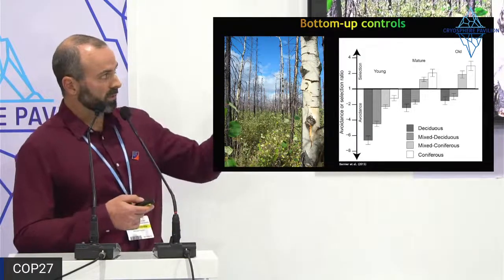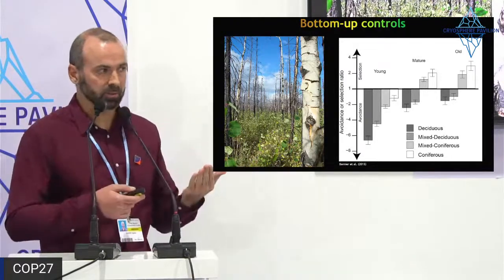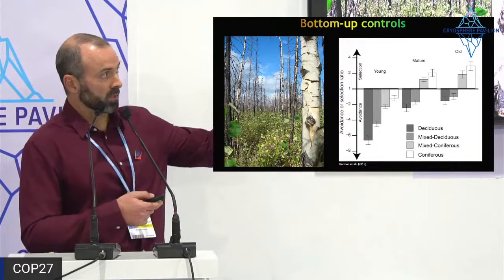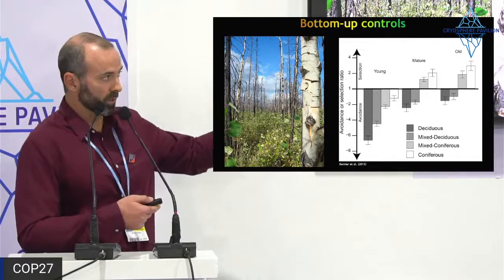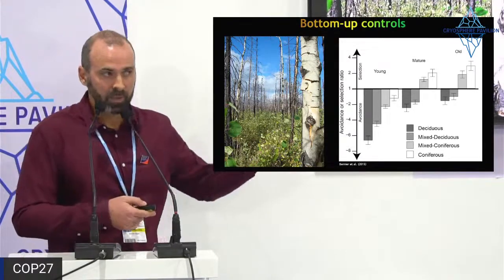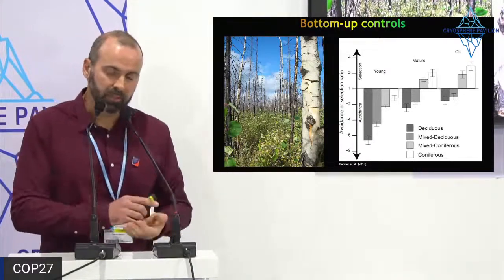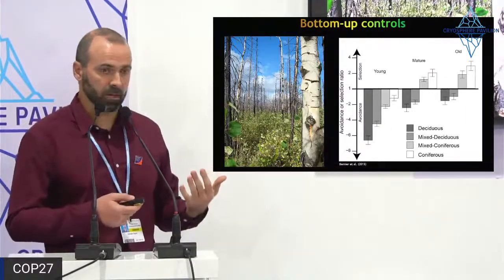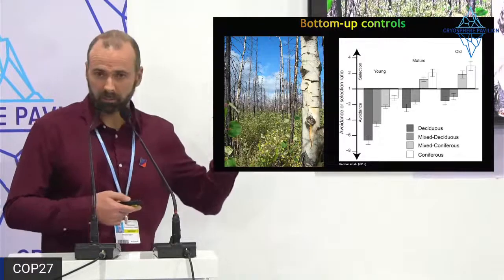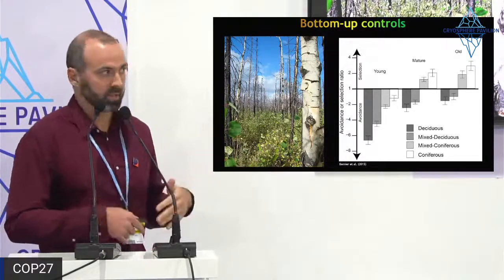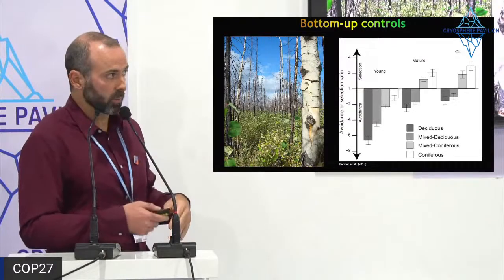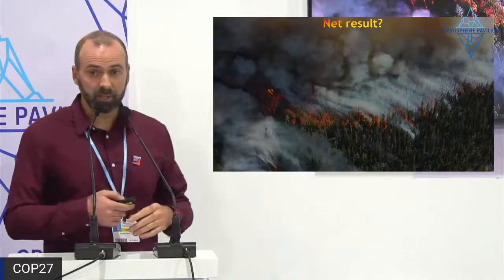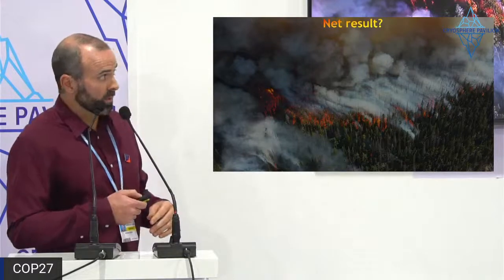Work by Bernier et al. 2015 looking across all of Canada found that older coniferous forests were more likely to burn, while younger deciduous forests are less likely to burn. This is a negative dampening feedback. There are questions about how this will play out with more warming and more extreme fire seasons — some anecdotes from fire managers suggest this model is no longer working for late-season fires — but it still represents a negative feedback pushing the system away from potential tipping points.